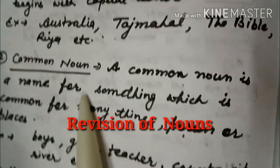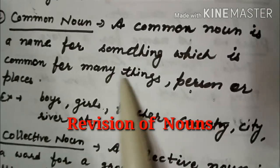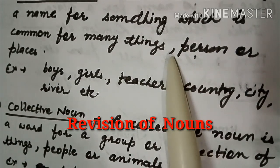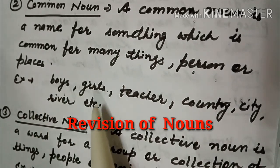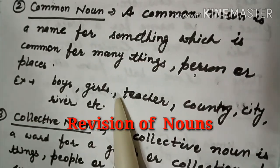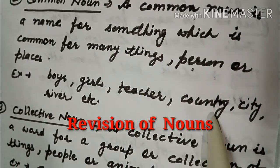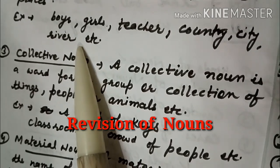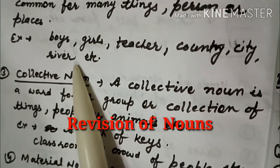Second — common noun. Common noun means 'jaati vachak sangya'. A common noun is a name for something which is common for many things, persons, or places. Common noun kya hai — jo kissi jaati ko sambodhi kar raha ho jo sab ke liye common ho. For example: boys, country, city, river. Agar 'Ganga' bolte hain toh woh proper noun hai, aur 'river' common noun ho gaya.